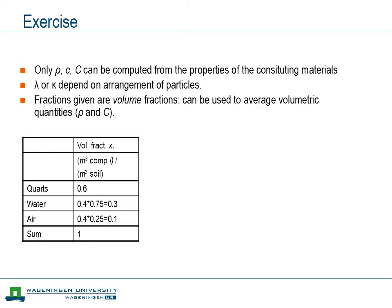The only thing that was given is the volumetric fractions, so we should start from those. The matrix constituted 60% of the total volume, and the remaining 40% — the pores — were filled partly with water and partly with air. That gives a volumetric fraction for water of 30% and for air of 10%. Together, all volumetric fractions sum to 100%.